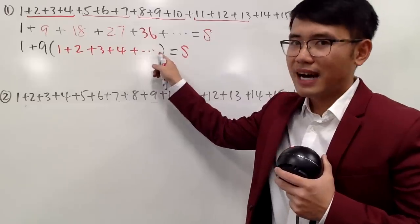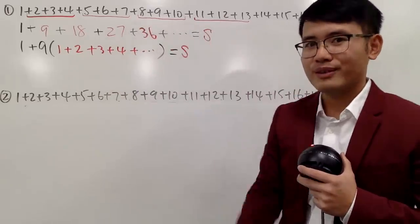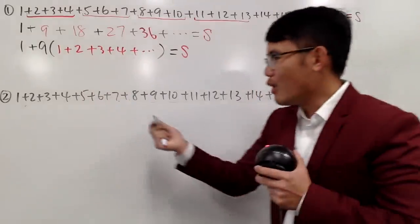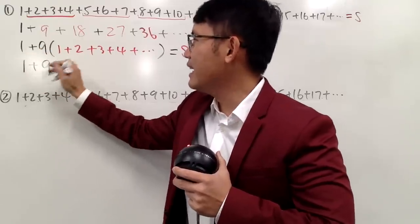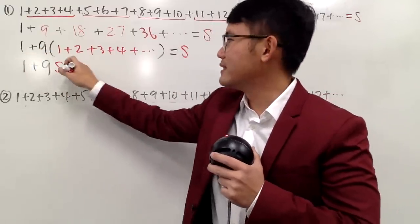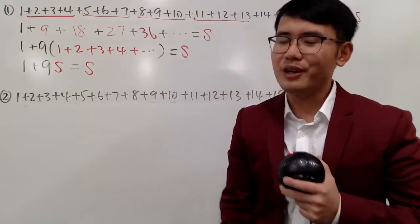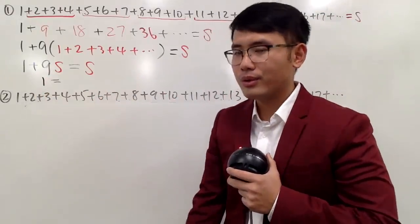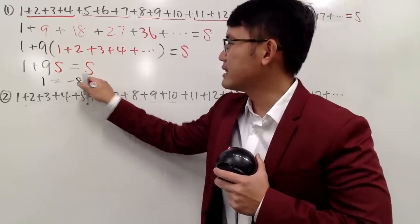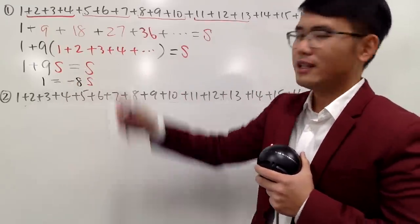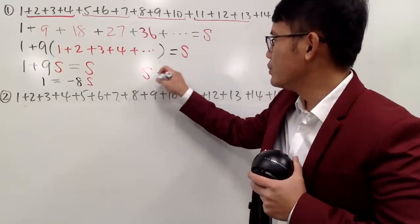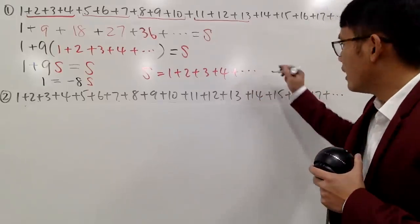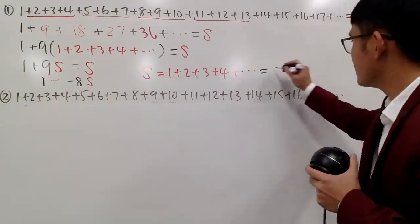Because of the dot dot dot, the series inside the parentheses is the same as the original S. So we can write this as 1 plus 9S equals S. Solving: subtract 9S from both sides to get 1 equals negative 8S. Dividing both sides by negative 8, we find that S — which is 1 plus 2 plus 3 plus 4 plus ... — equals negative 1 over 8.